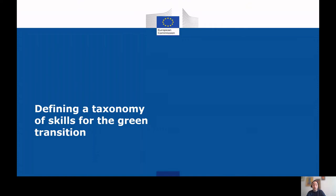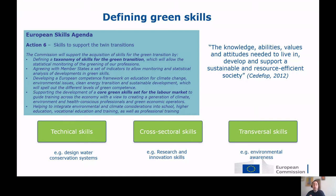Another important element of ESCO version 1.1 is the definition of a taxonomy of skills for the green transition. This is an action that comes directly from the European Skills Agenda, which has a specific action — Action 6 — dedicated to the skills supporting twin transitions, including the taxonomy of skills for the green transition. When it comes to green skills, the first point to note is the definition of what green skills are. For the taxonomy of green skills in ESCO, the Commission uses a definition drafted by Cedefop back in 2012 and supported also at the OECD level, which defines green skills as the knowledge, abilities, values, and attitudes needed to live in, develop, and support a sustainable and resource-efficient society.